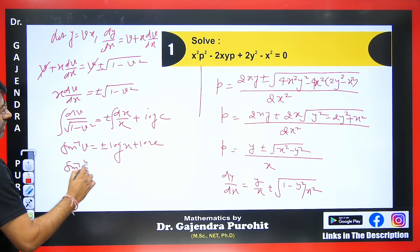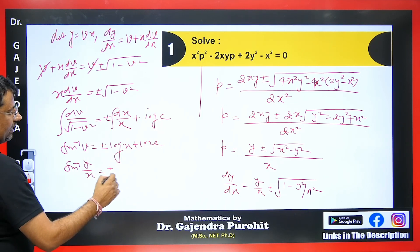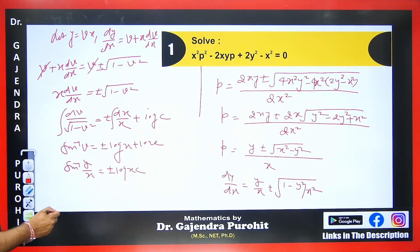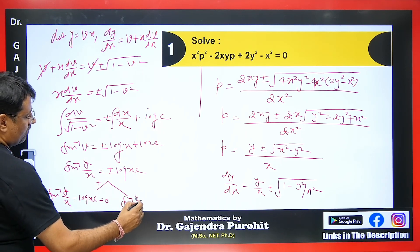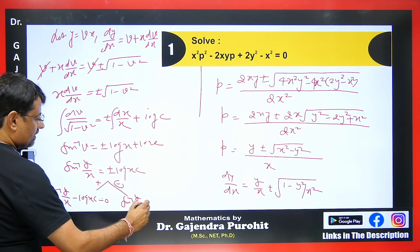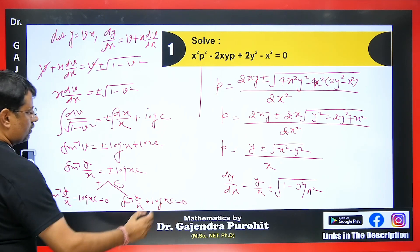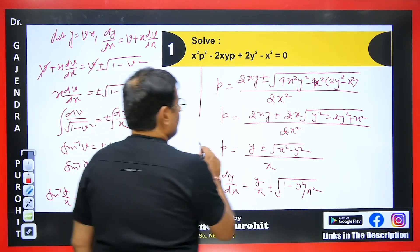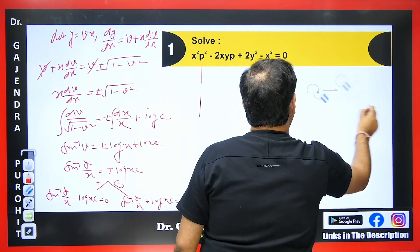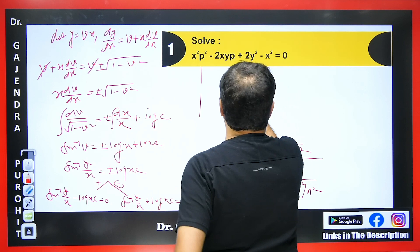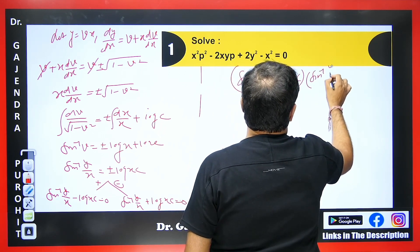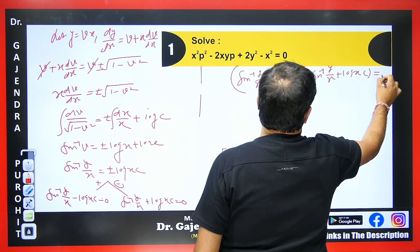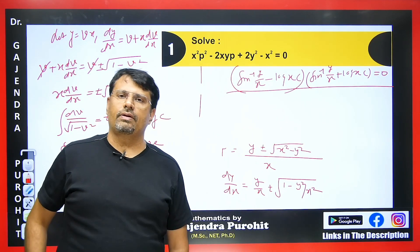Substituting back v = y/x, we get sin⁻¹(y/x) = ± log(xc). There are two cases: taking plus gives sin⁻¹(y/x) − log(xc) = 0, and taking minus gives sin⁻¹(y/x) + log(xc) = 0. We multiply both factors together, giving the final answer: [sin⁻¹(y/x) − log(xc)] · [sin⁻¹(y/x) + log(xc)] = 0.